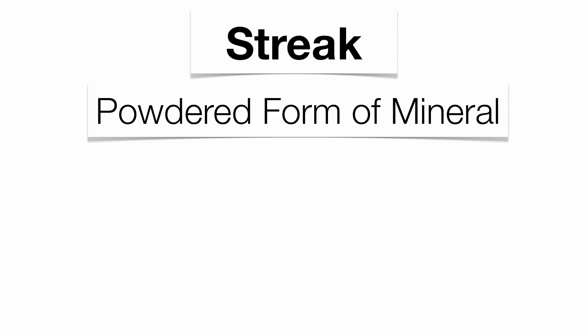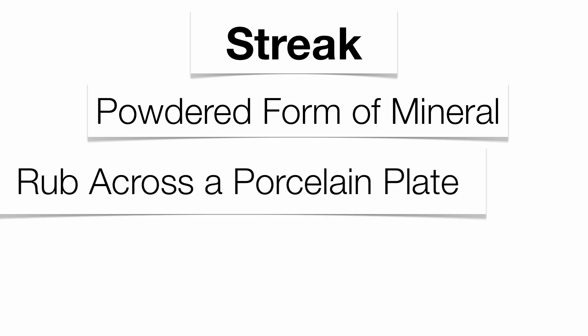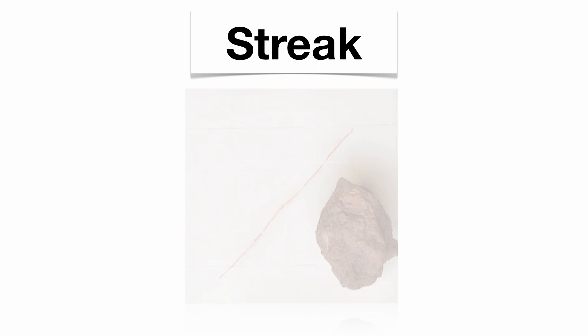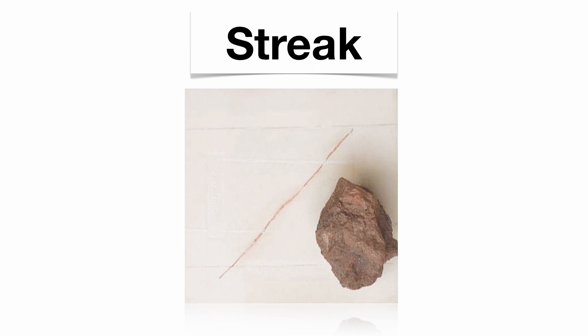Next up is streak, which is the powdered form of the mineral — a very reliable property. You're basically going to take your mineral, rub it across a porcelain plate, and you're going to get the powdered form. You could have 100 samples of quartz with 100 different colors, and each sample of quartz can give you the exact same streak color. Very reliable from sample to sample.